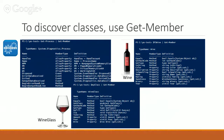You're used to dealing with classes — the objects that Get-Process returns are instances of the System.Diagnostics.Process class. To discover information about that class you use the Get-Member cmdlet. In the same way, you'll be able to use Get-Member to discover properties, methods, and other members like events of the scripted classes you create in Windows PowerShell.